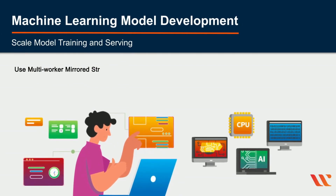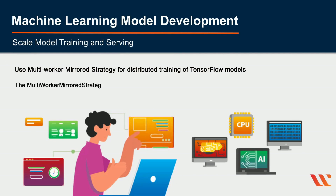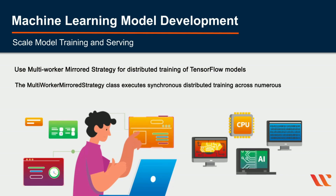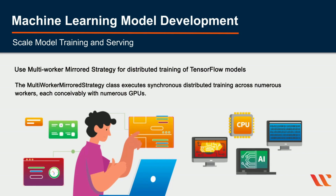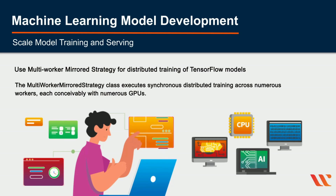Use Multi-Worker Mirrored Strategy for distributed training of TensorFlow models. The MultiWorkerMirroredStrategy class implements synchronous distributed training across multiple workers, each potentially with multiple GPUs. Each variable in the model is mirrored across all replicas, and efficient all-reduce algorithms are used to communicate variable updates across devices. This strategy is scalable, performant, and does not need a parameter server, reducing training infrastructure cost.